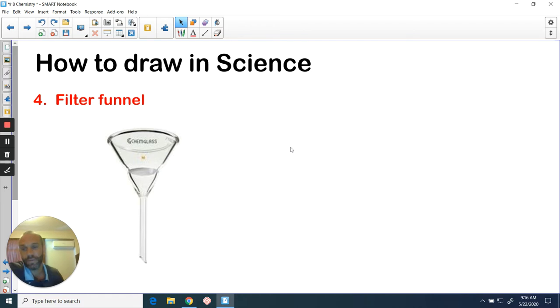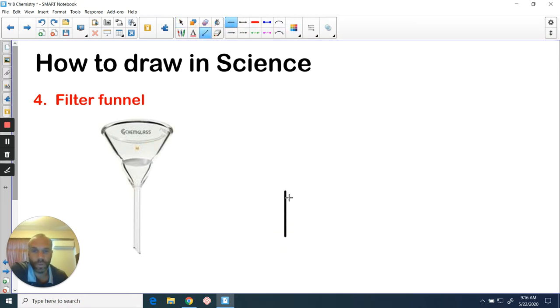Now let's do a filter funnel, and this will be used to separate substances. Again, slightly trickier than the ones we've done before, but not too difficult at all. We've got two parallel lines quite close together, which would represent this part of the filter funnel, and then we've got just a V shape here, like so. One, two, three, four straight lines, simple as that.